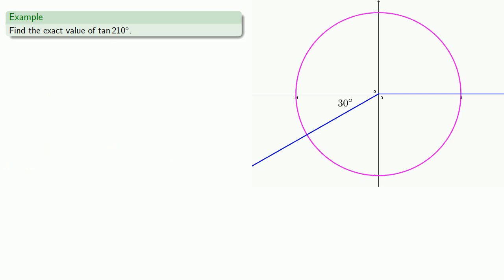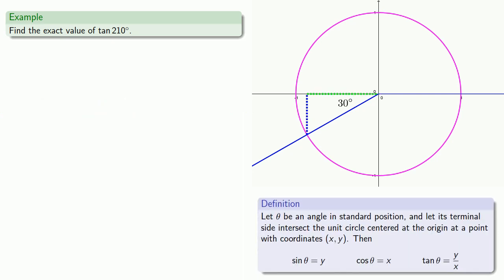So again, we look for the right triangle. Since tangent of theta is y over x, and both x and y are negative in the third quadrant, then tangent of theta will be positive.